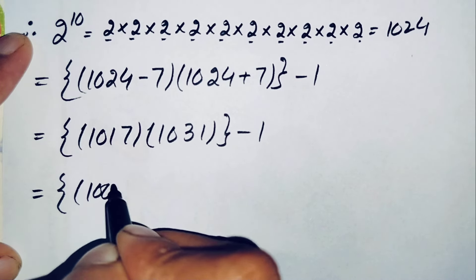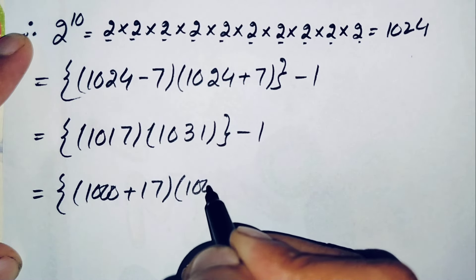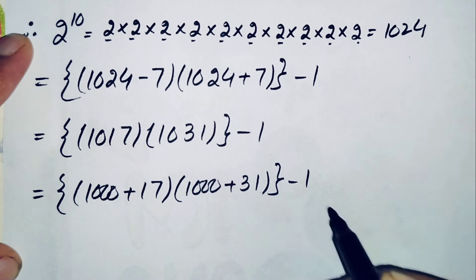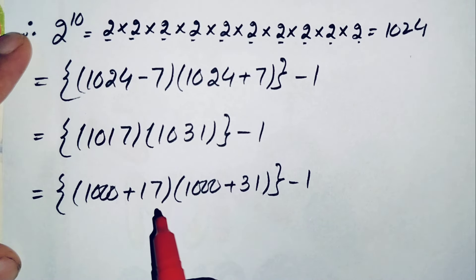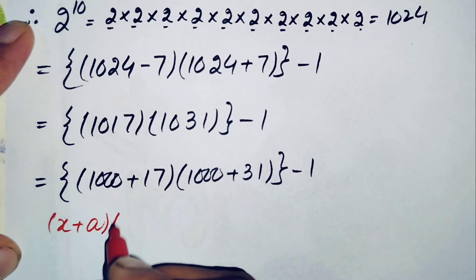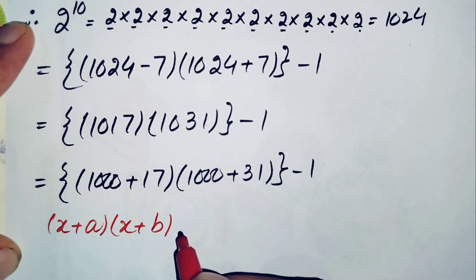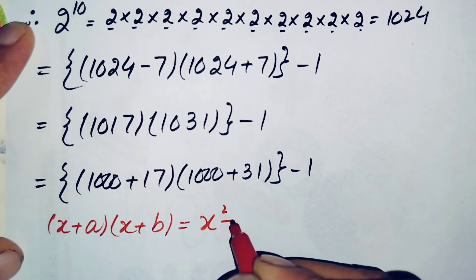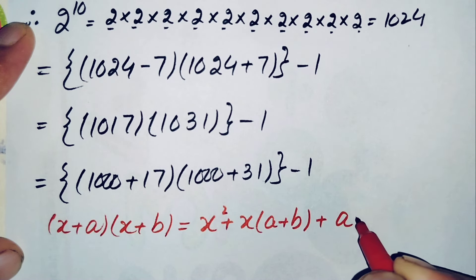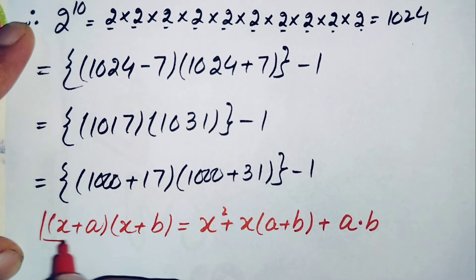We can write 1017 as 1000 plus 17, and 1031 as 1000 plus 31. These two numbers are now in the form x plus a times x plus b, which expands to x squared plus x times a plus b, plus a times b.